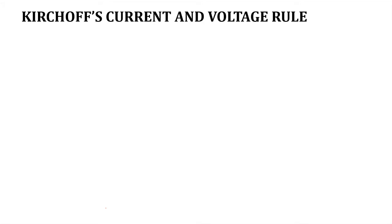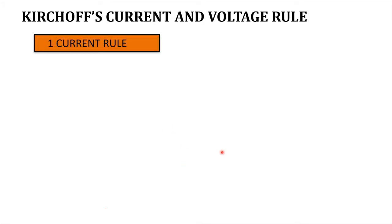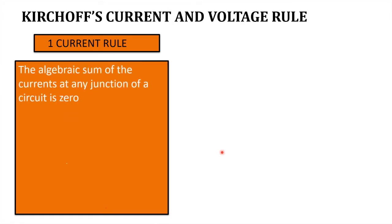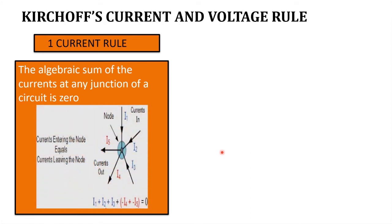Kirchhoff's current and voltage rule. The current rule says that the algebraic sum of the currents at any junction of a circuit is zero. The currents entering the junction — I1, I2 and I3 — are taken to be positive, and the currents I4 and I5 going away from the junction are taken to be negative. So I1 plus I2 plus I3 minus I4 minus I5 will be equal to zero.